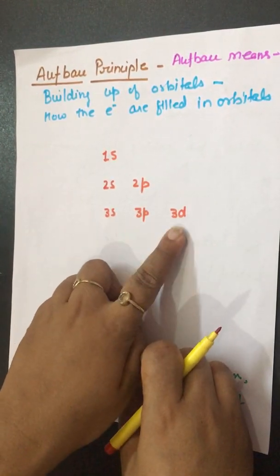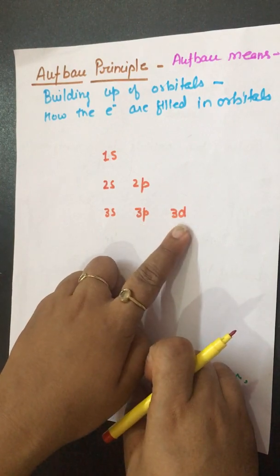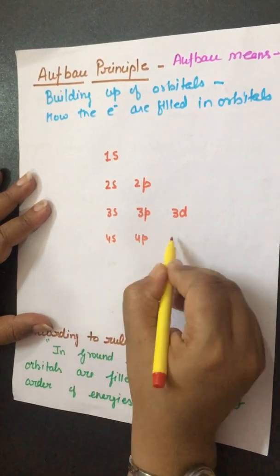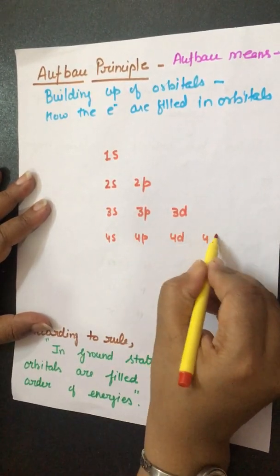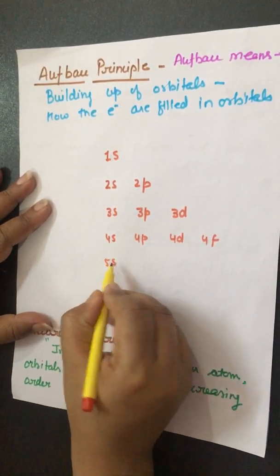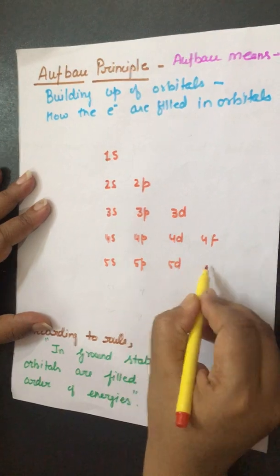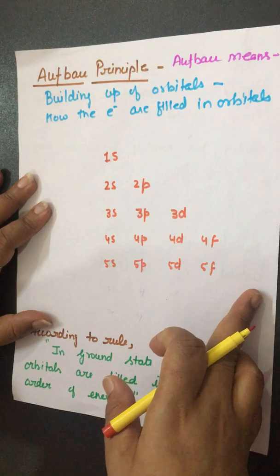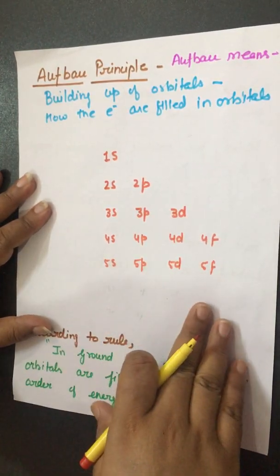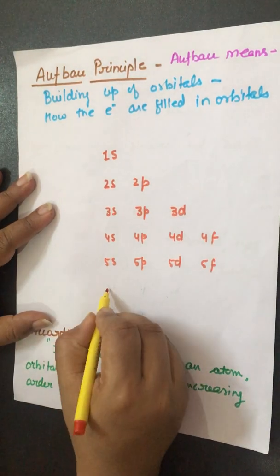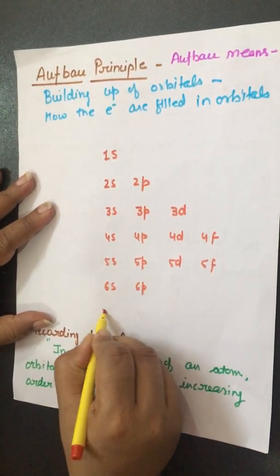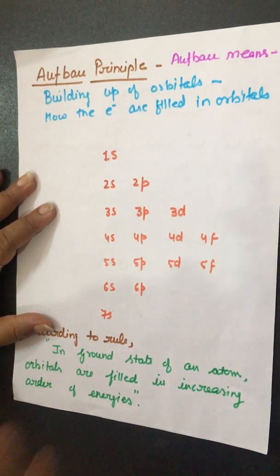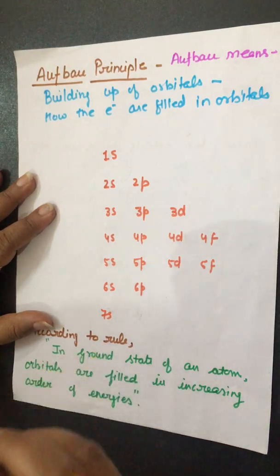The 3p sub-shell has three orbitals, and the 4d sub-shell has five orbitals. The fourth shell has 4s, 4p, 4d, and 4f. The fifth shell has 5s, 5p, 5d, and 5f. We won't go further than this because in our periodic table only these atomic numbers are given — so we also consider 6s, 6p, and 7s. Now, how can we find out the energy order of the orbitals?